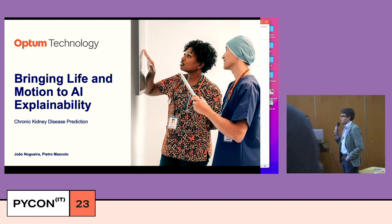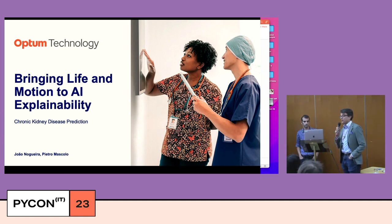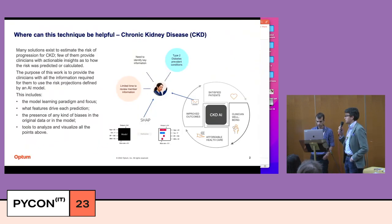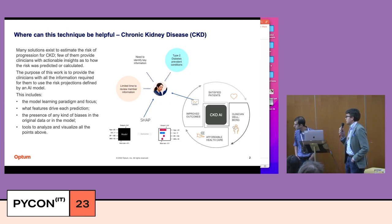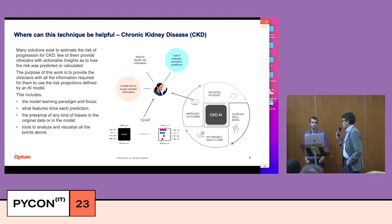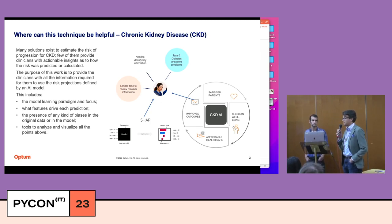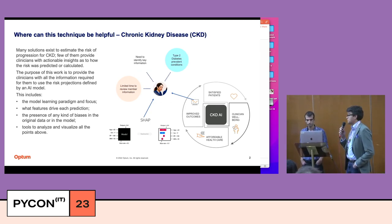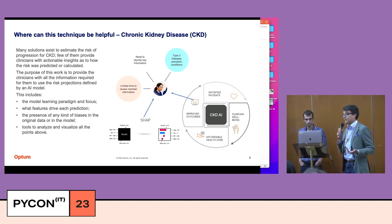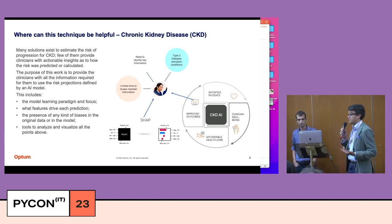We stem this project from another project we're working on related to estimating the likelihood of progressing into chronic kidney disease for patients. We come from a company called Optum, part of UnitedHealth Group — a multinational company that works in the domain of clinical services, health services, and health insurance.